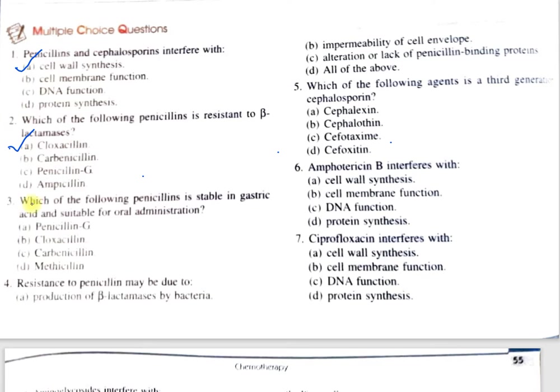Question number 3: Which of the following penicillins is stable in gastric acid and suitable for oral administration? Option A, penicillin G; B, cloxacillin; C, carbenicillin; D, methicillin. The correct option is B, cloxacillin. Cloxacillin is a semi-synthetic penicillin and is stable at the acidic pH present in the stomach. Amoxicillin and ampicillin are also acid-resistant.